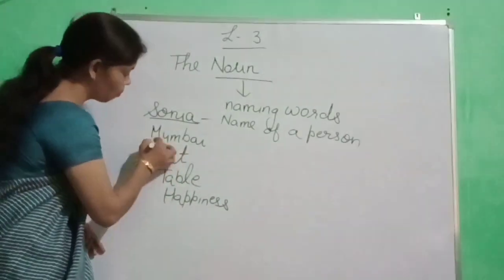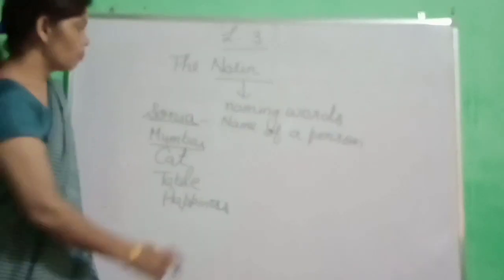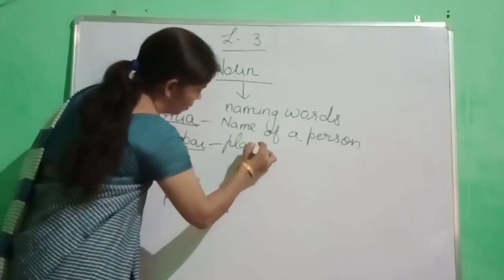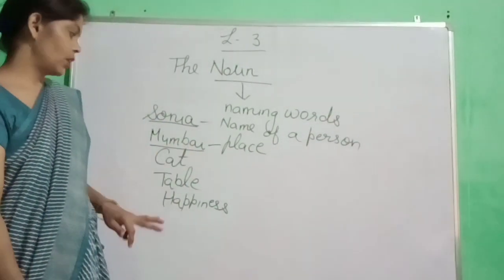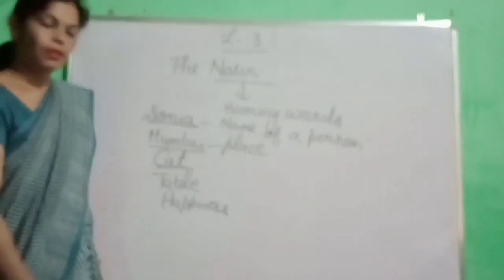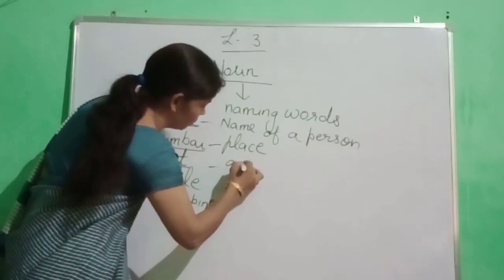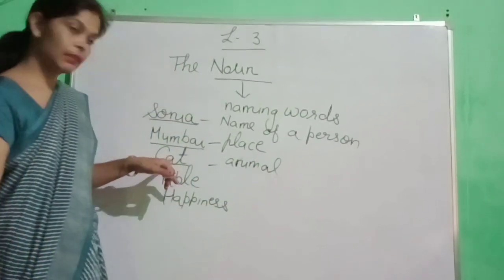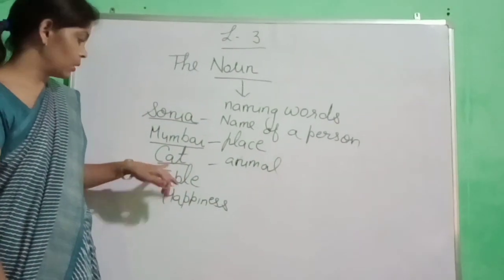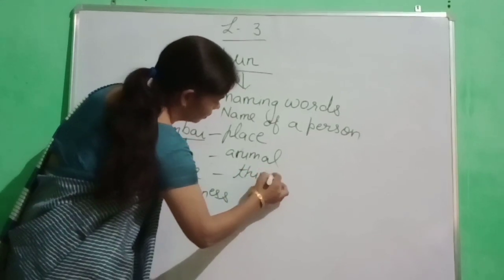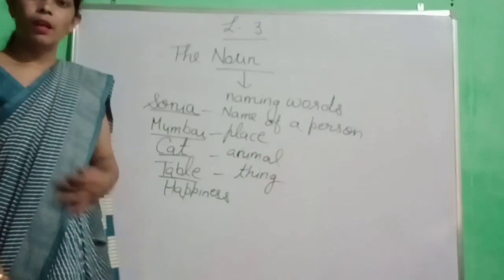Our second is Mumbai. Mumbai kya hai? Kisi place ka name hai na? Place hai na Mumbai? Very good. Cat — cat kya hai? Animals ka name hai na? Animal. What is cat? Cat is an animal. Table — table kya hai? Koi thing hai na? Thing. Clear?